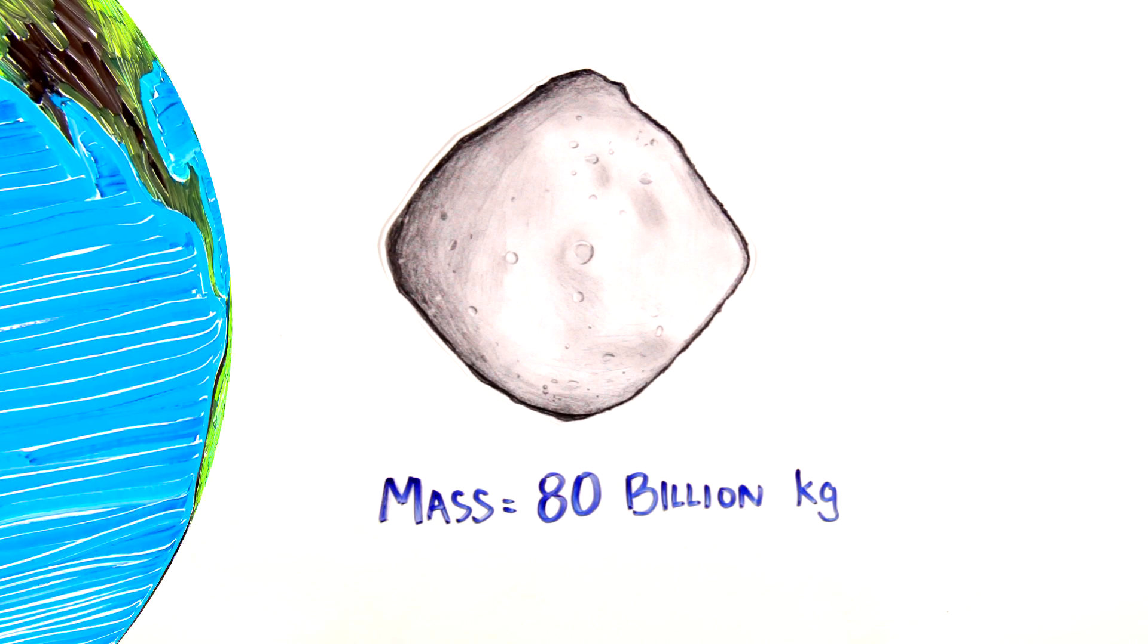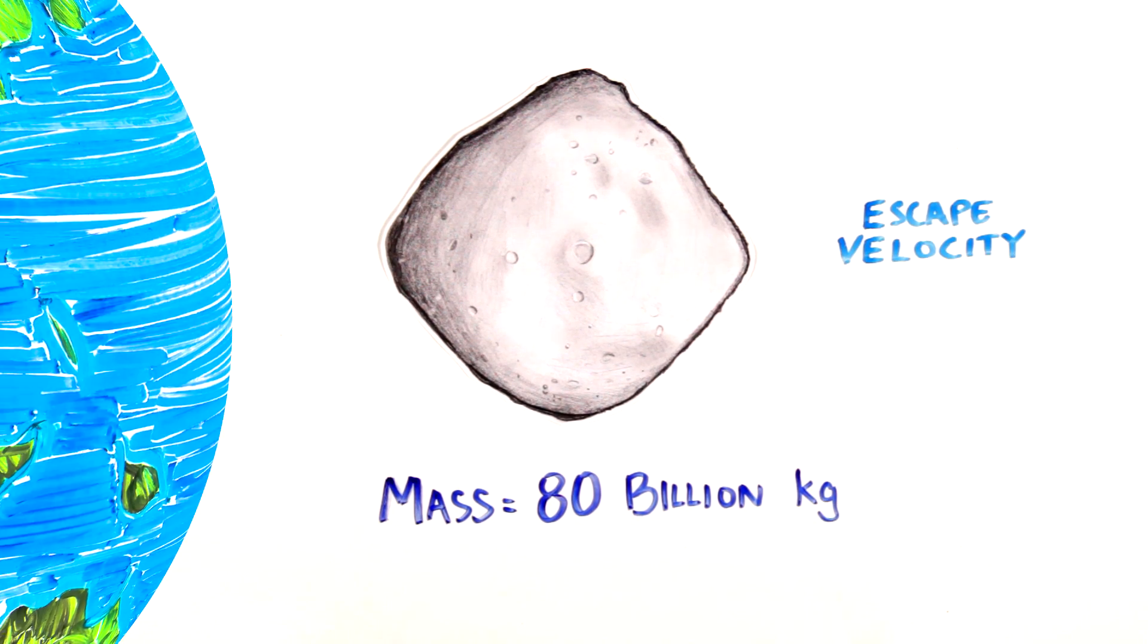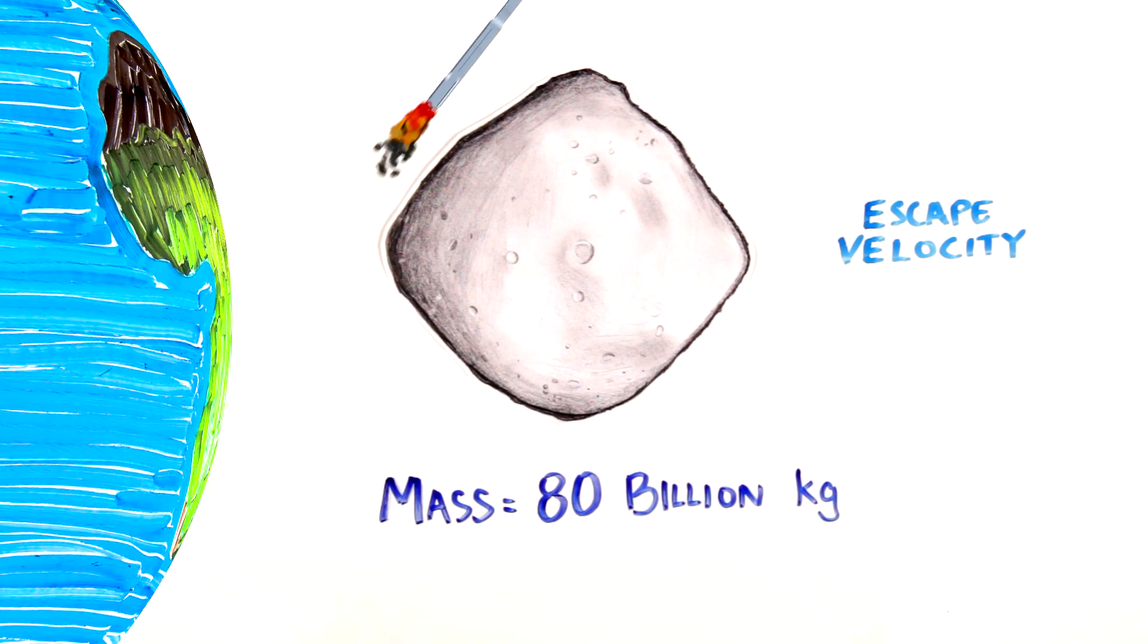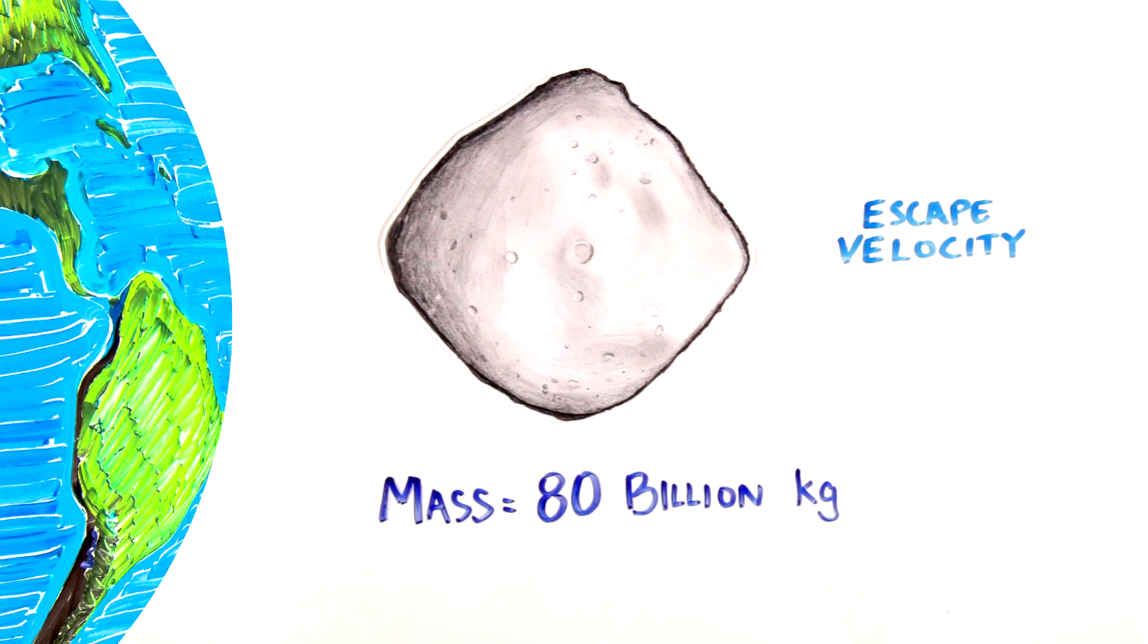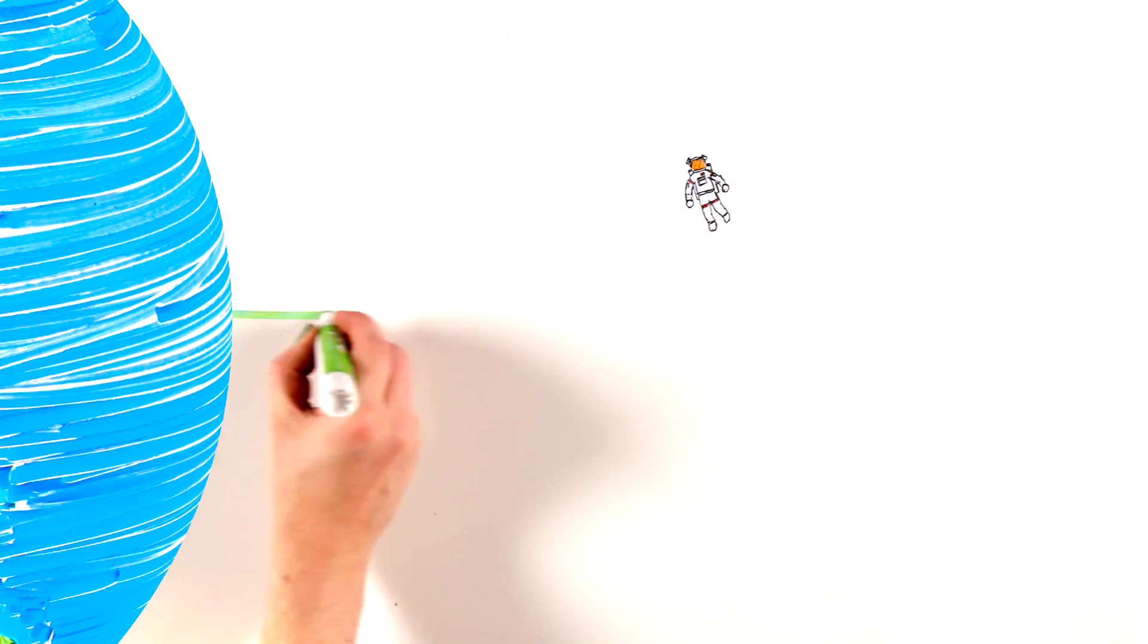When talking about the speed at which an object needs to move to break free of a gravity field, we use the term escape velocity. Although it takes the power of a rocket to blast off of the Earth's surface, the escape velocity of Bennu's surface is so small that a human could easily jump off of Bennu and into space.